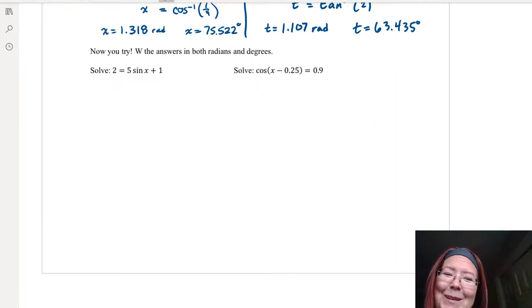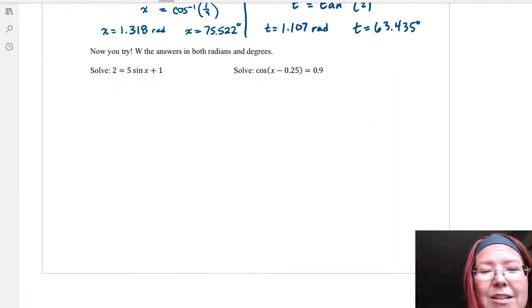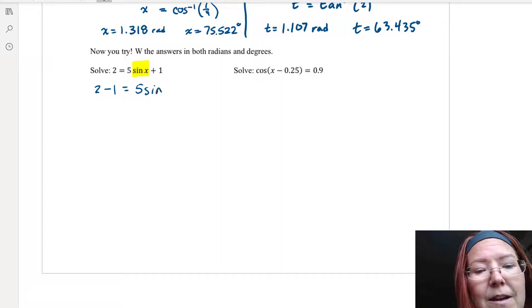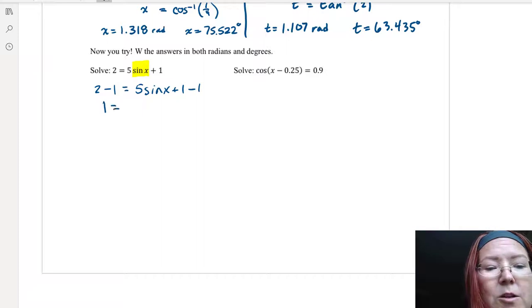All right, we're back. Let's start by solving 2 equals 5 sine x plus 1. I'm going to start by isolating this sine x before I do any kind of inverse. So I'm going to start by subtracting 1 from both sides. On the left I have 1 and on the right 5 sine x.